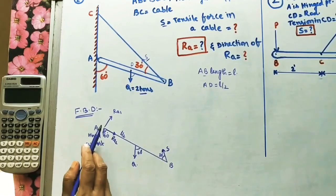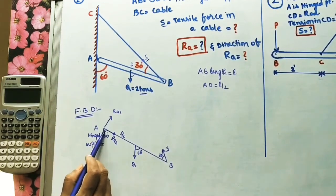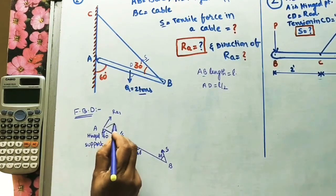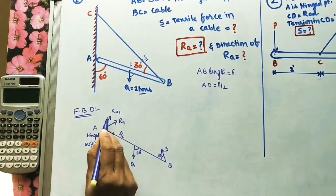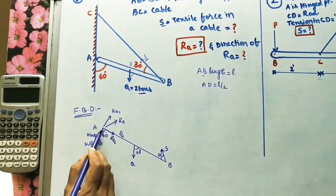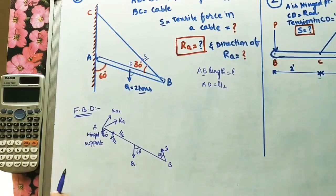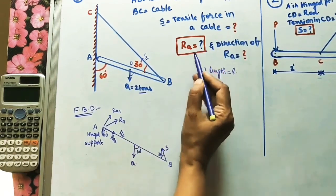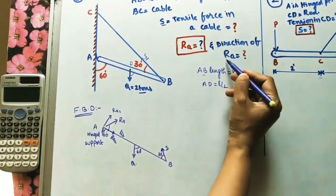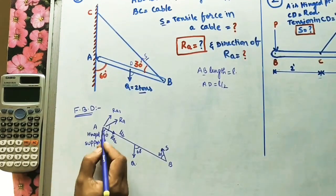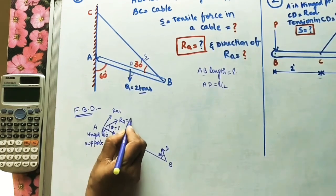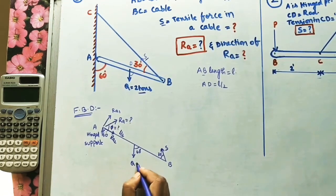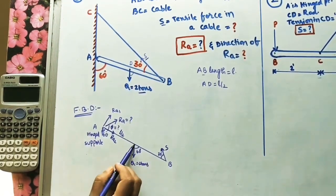At the hinged point, two forces are acting: one perpendicular to the surface and one along the surface. The resultant is RA. We don't know in which direction these are acting, so we initially assume RA2 along the bar and RA1 perpendicular. We also need to find the angle phi that RA makes with the bar.